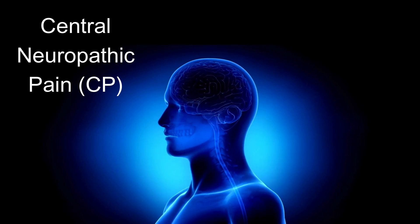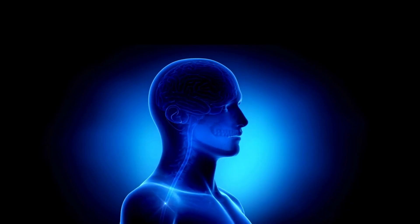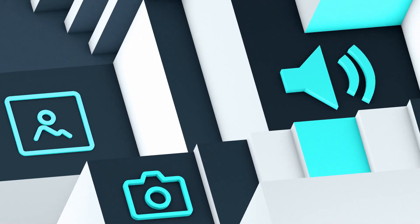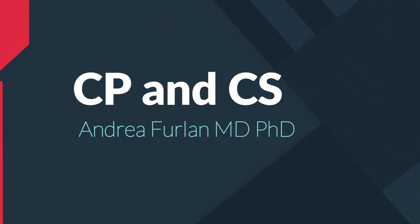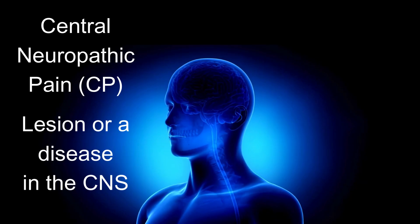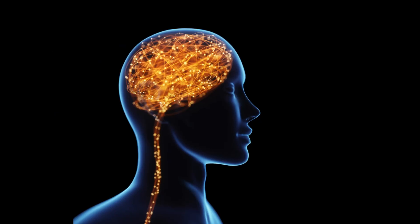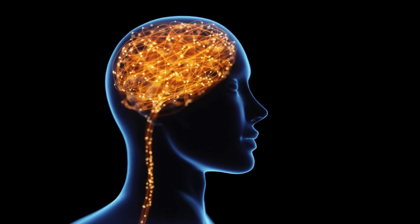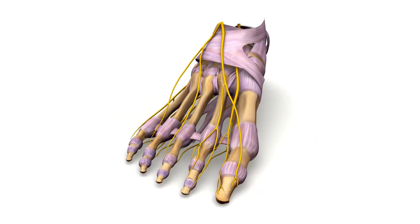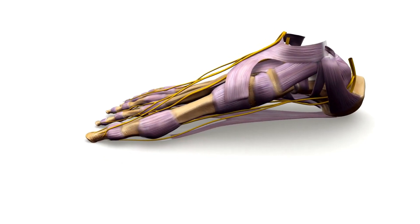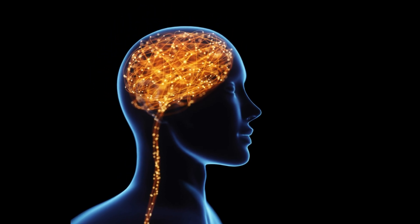What's the difference between central neuropathic pain and central sensitization? These are two different types of pains. Central neuropathic pain is a type of pain caused by a lesion or a disease in the central nervous system, which includes the brain and spinal cord. Unlike pain that stems from an injury to the body's tissues or nerves in the limbs, central neuropathic pain originates from within the nervous system itself.